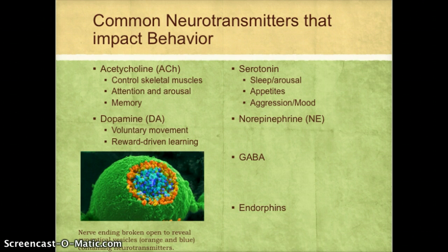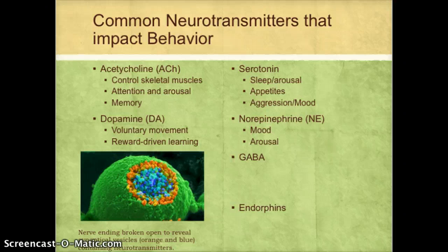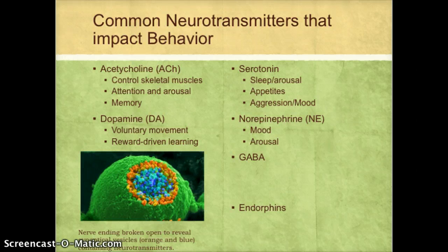Serotonin and norepinephrine are related. Serotonin affects sleep and arousal, appetite — not just for food but also sexual appetite — and mood and aggression. Norepinephrine also plays a role in sleep, arousal, and mood. As a result, we see these two neurotransmitters sometimes implicated in cases of depression.